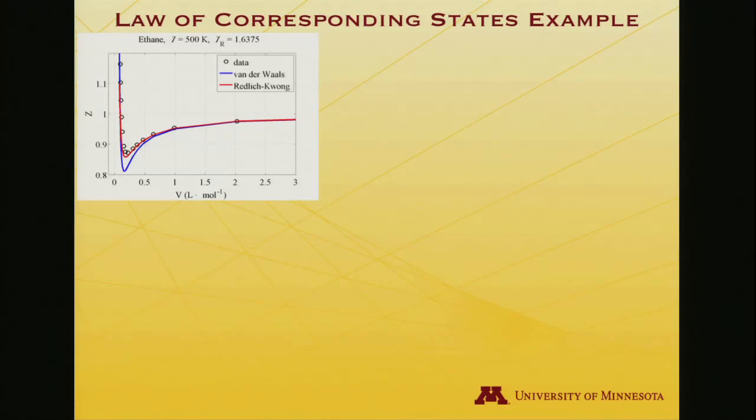which is a reduced temperature of 1.6375. So it is 1.6375 times higher in temperature than the critical temperature. So you could work out on a little calculator if you'd like what the critical temperature must be by dividing 500 by that. But we won't worry about that for the moment. I'll just show you that the experimental data, those are the open circles.